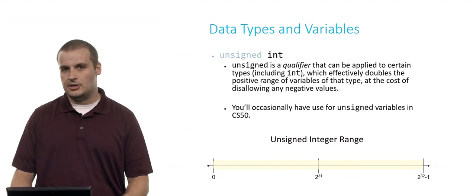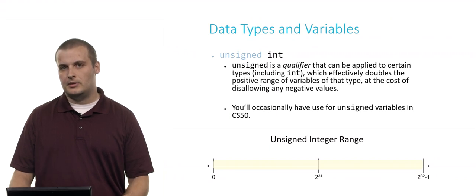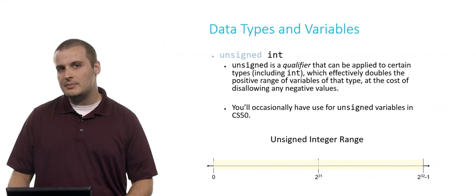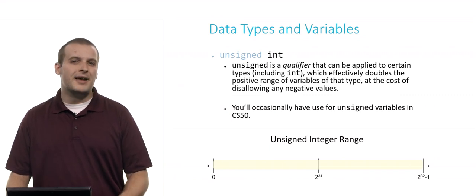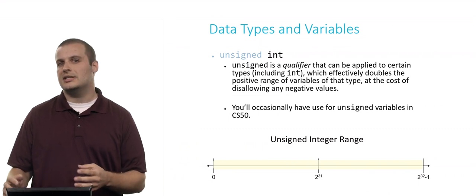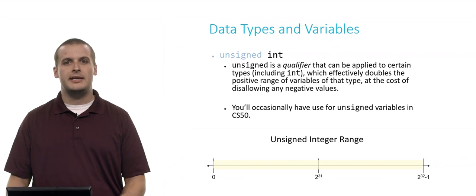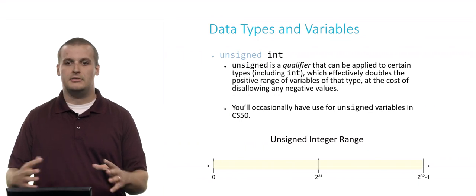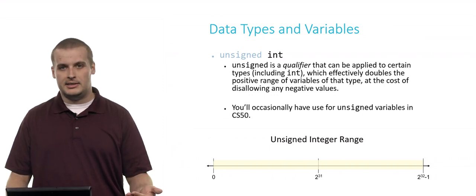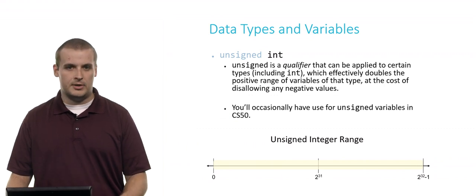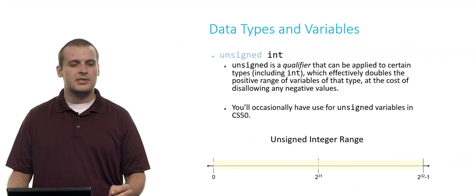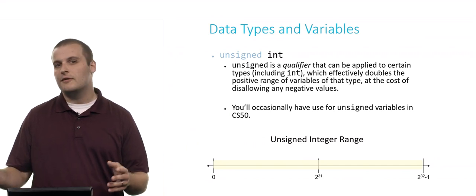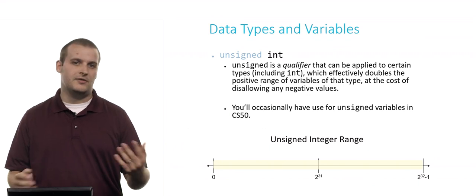We also have something called an unsigned integer. Unsigned ints are not a separate type of variable. Rather, unsigned is what's called a qualifier. It modifies the data type of integer slightly. What it effectively does is doubles the positive range of values that an integer can take on at the expense of no longer allowing you to take on negative values. So the range of values that you can represent with an unsigned integer are 0 to 2 to the 32nd power minus 1, or approximately 0 to 4 billion.